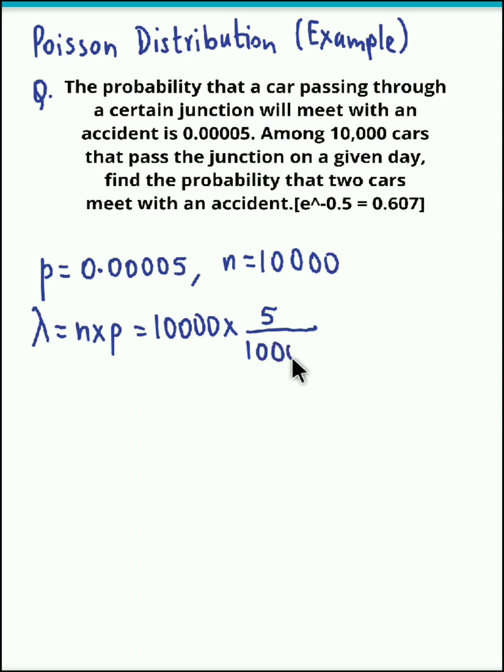Now we can easily cancel out these zeros. So we have 5 upon 10 which is 0.5.